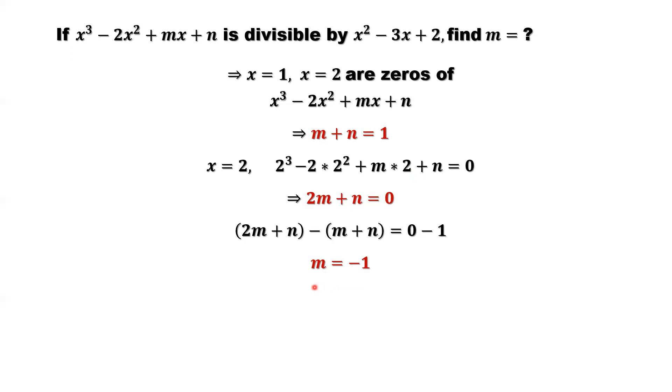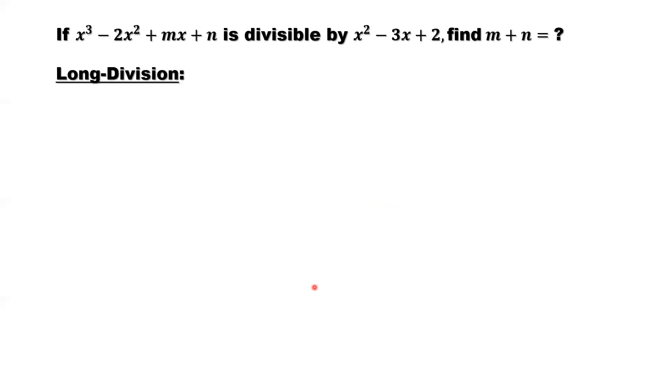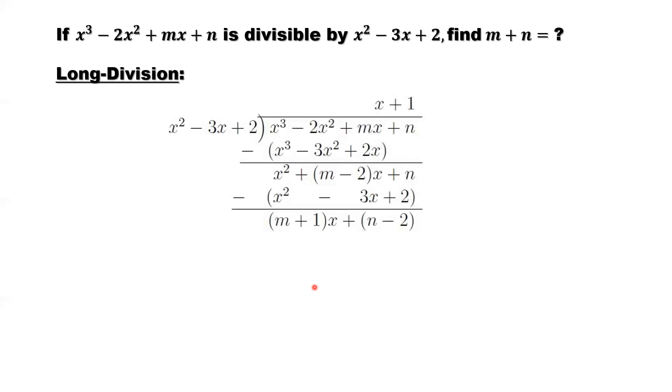This is our first method. We also can use a different method called the long division. So here, that's x to the power 3 minus 2x squared plus mx plus n divided by x squared minus 3x plus 2.